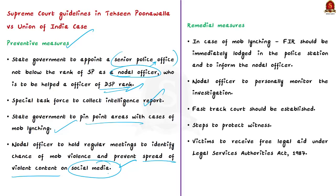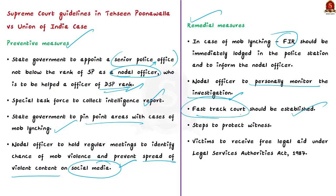Under remedial measures, if a case of mob lynching comes to the notice of the local police station, an FIR must be immediately lodged without delay, and information must be given to the nodal officer who shall personally monitor the investigation and ensure the charge sheet is filed within the statutory period. Fast-track courts shall be established to deal with cases of lynching and mob violence, steps should be taken to protect the identity of witnesses, and victims or next of kin of deceased victims shall receive free legal aid under the Legal Services Authorities Act of 1987.